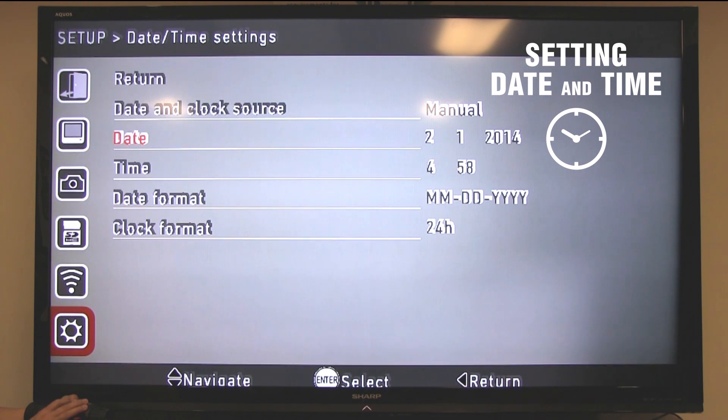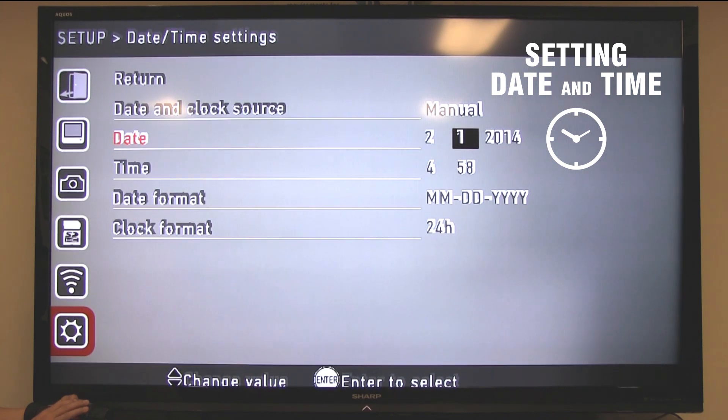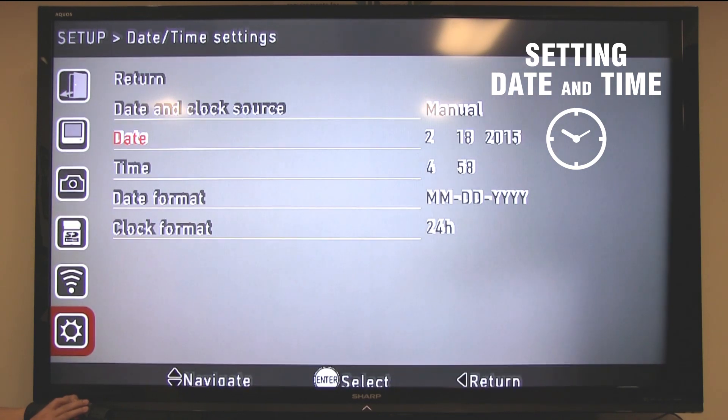And then move to the date menu and press enter. Now it's February. Here we're going to press the right arrow to move to the day. We're going to use the up arrow to select the day. We're going to press the right arrow again and select the year. Once we've entered the date we can press enter and it'll bring us back into the menu previous.